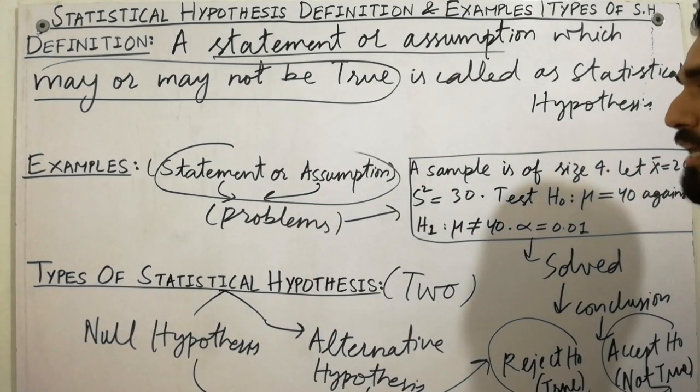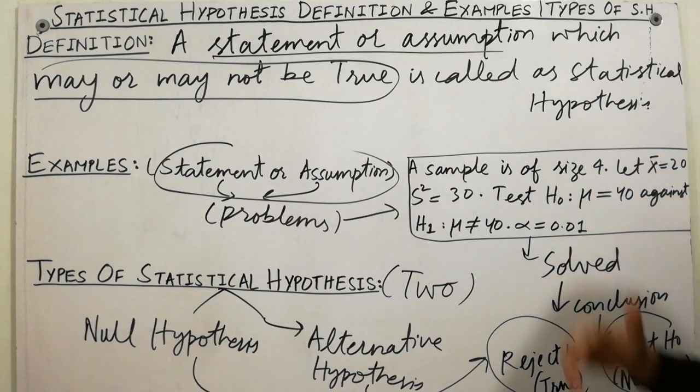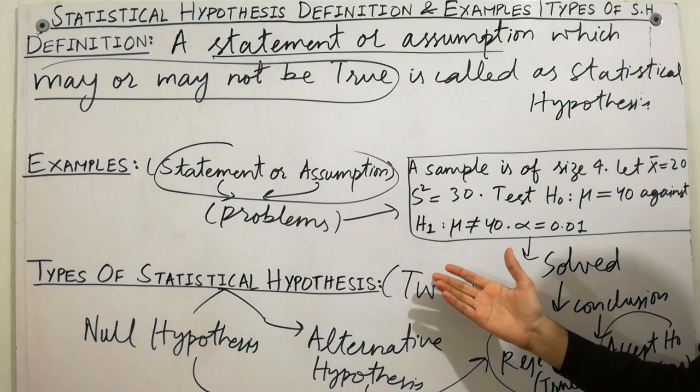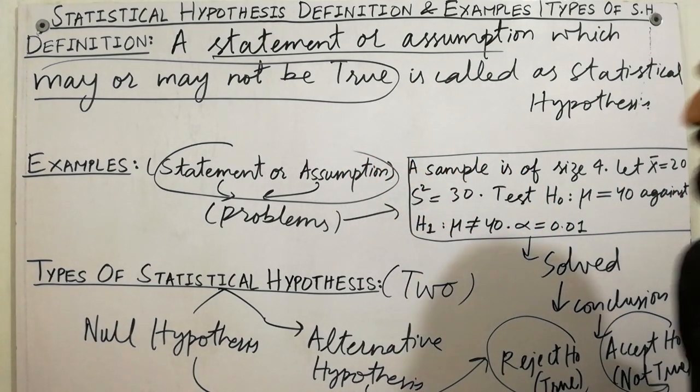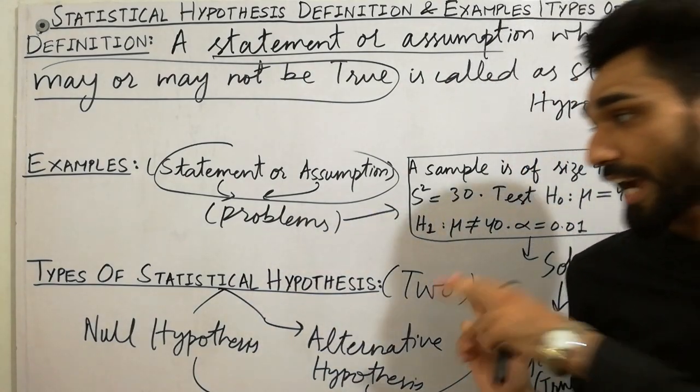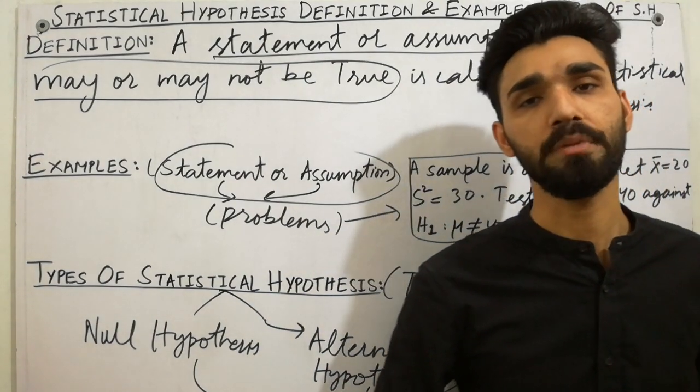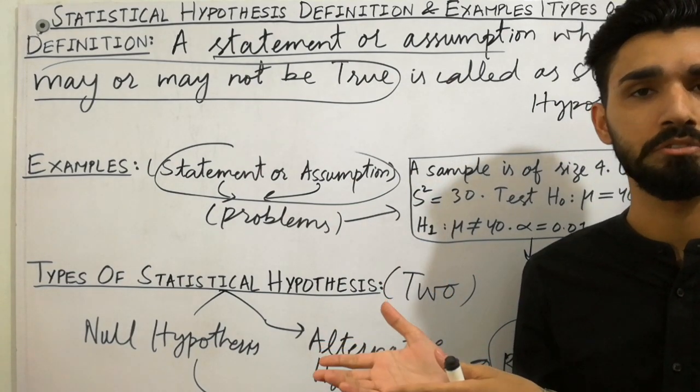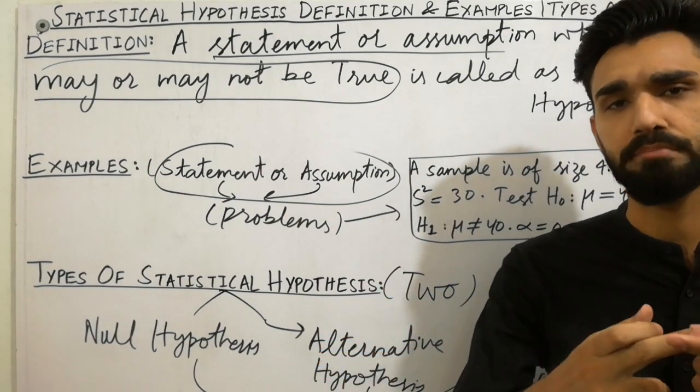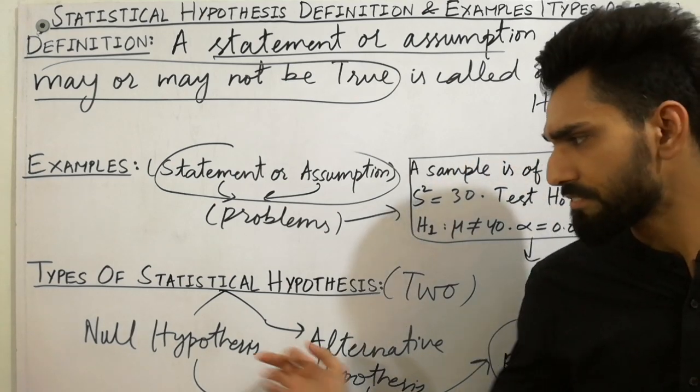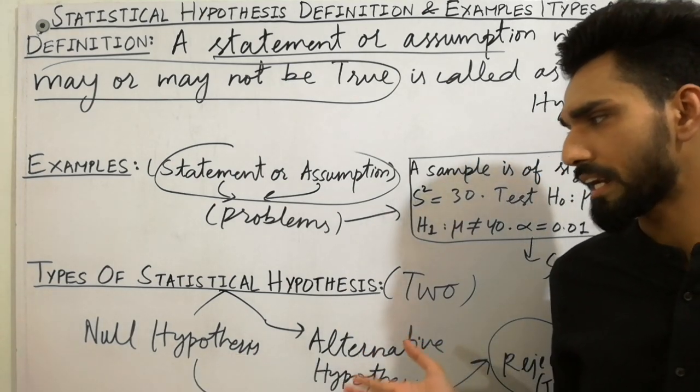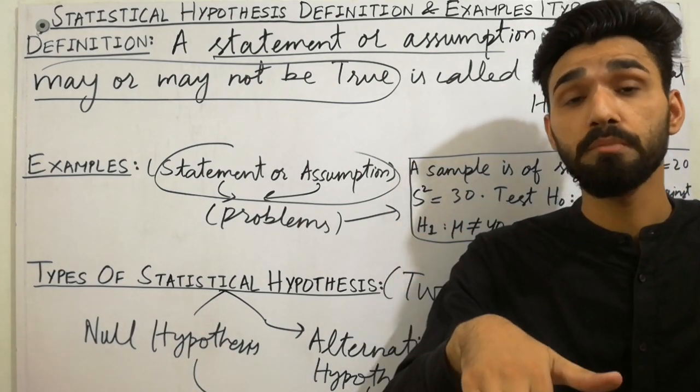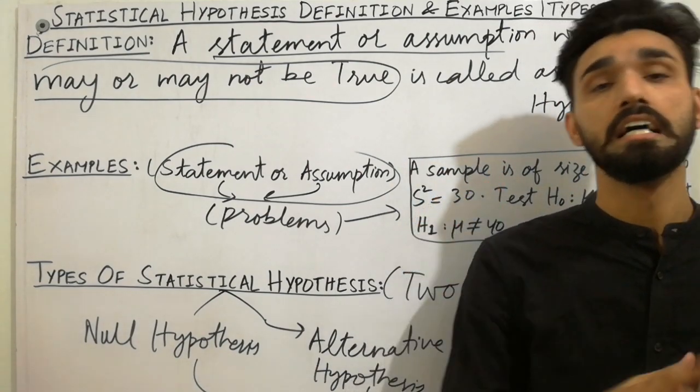I hope we have cleared the concepts about statistical hypothesis definition, examples, and types. Thanks for watching the video. If you liked this video, please subscribe to my YouTube channel. I have already discussed the difference between acceptance region and rejection region, and difference between null and alternative hypothesis. You can watch those lectures whose links will be in the description below. Goodbye.